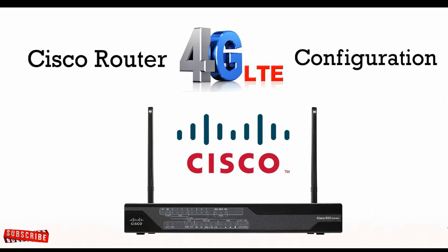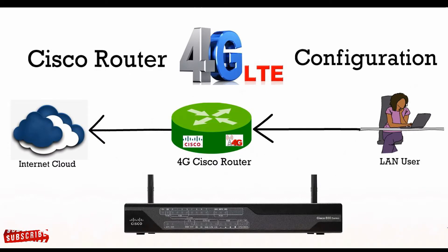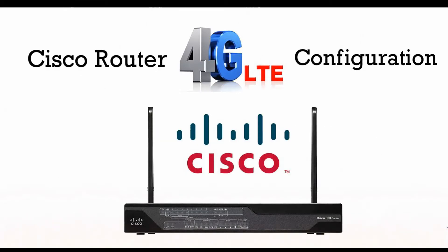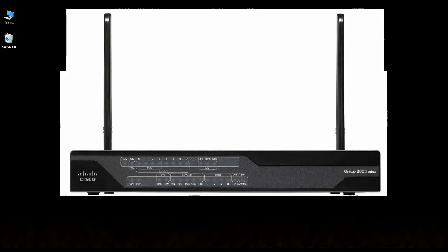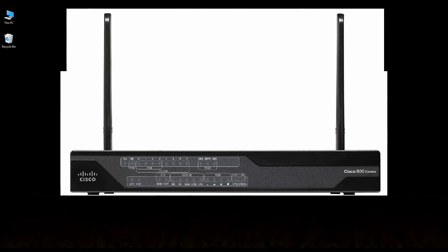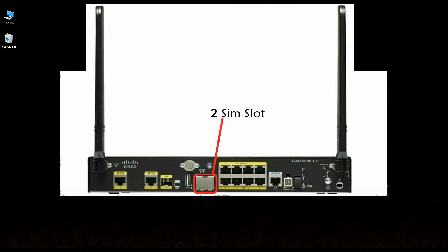Welcome back to Traffic Path. In this video I'm going to show you how to configure 4G LTE cellular configuration in a Cisco router. I am using a Cisco 800 series router — specifically the Cisco 899 4G LTE model. This router has two SIM slots and several Ethernet ports.